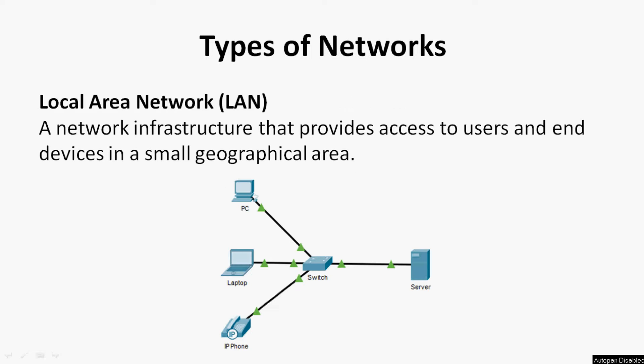Coming to the types of networks, first of all we will see LAN, that is local area network. A network infrastructure that provides access to users and end devices in a small geographical area is called a local area network.